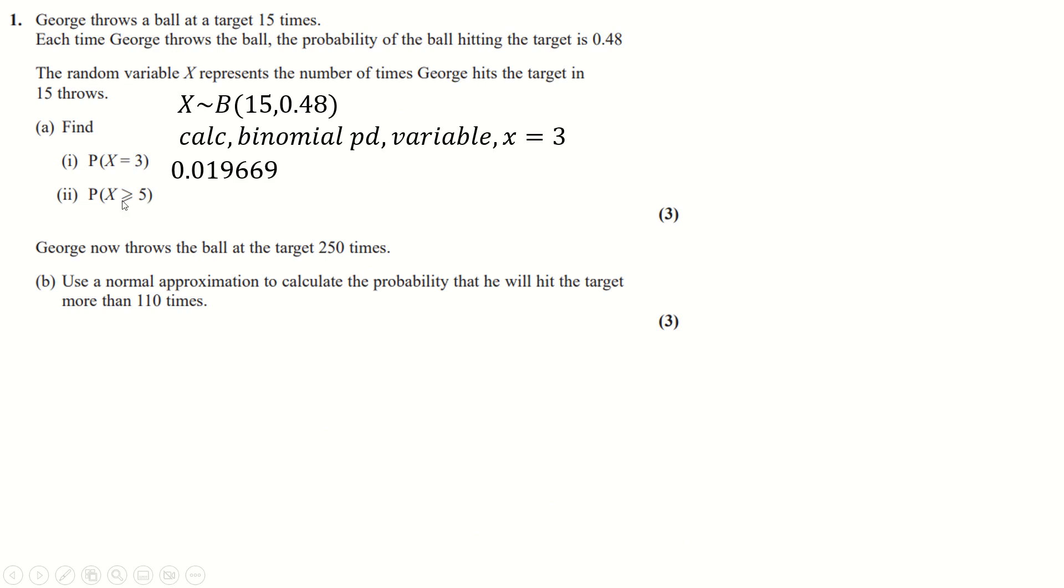And then this one, this is the same as 1 minus x less than or equal to 4. And of course, we can use the binomial cd function in the calculator and put in 4 again. And we'll get 1 minus whatever we get at, which would be this here.